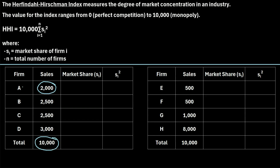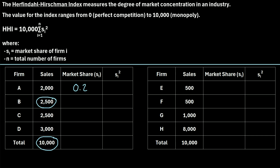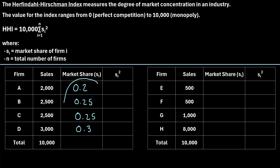For firm A, their market share is 2,000 divided by 10,000, which turns out to be 0.2, or 20%. So firm A has 20% market share. For firm B, we take 2,500 divided by 10,000, which comes out to 0.25. Firm C has the exact same market share, 0.25. And firm D, their 3,000 sales divided by 10,000 comes out to 0.3. The sum of all of these values adds up to 1, which makes sense — the total market share is 100%.